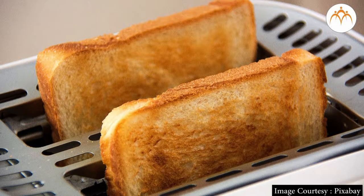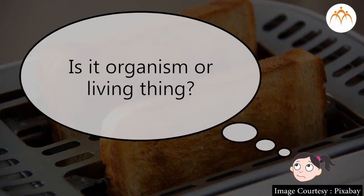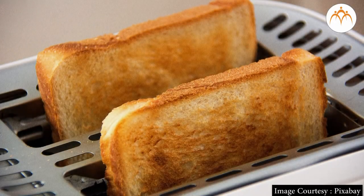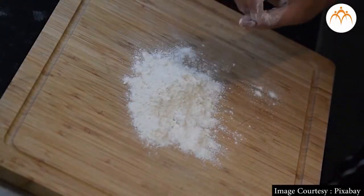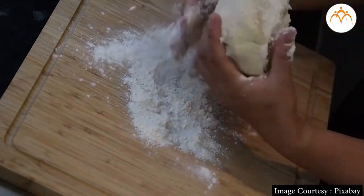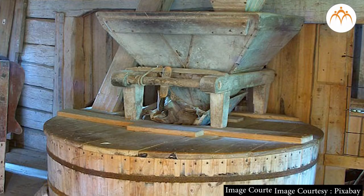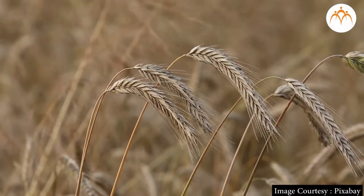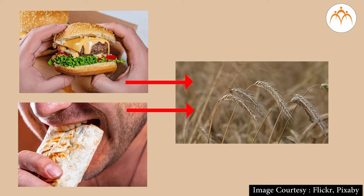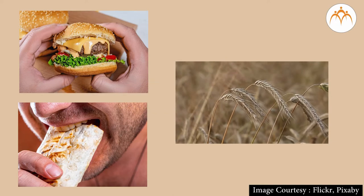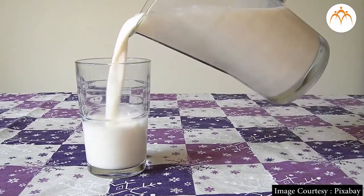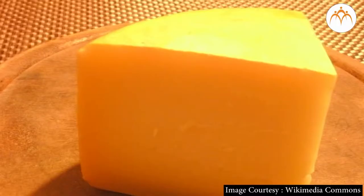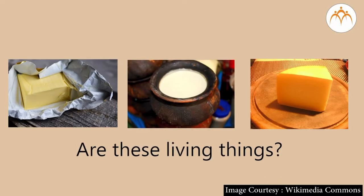Let us consider bread. Is it an organism or a living thing? Of course it isn't. Bread is prepared from wheat flour, i.e. atta, water and yeast. Wheat flour is obtained from grinding wheat grains, which are basically seeds from the wheat plant. So when we eat bread or chapatis or parathas, we are depending on the wheat plant for our food. Another example is milk and various products obtained from milk like butter, curd, cheese etc. Are these living things?